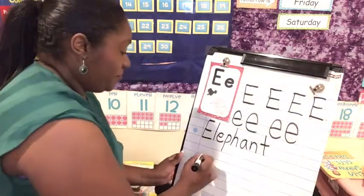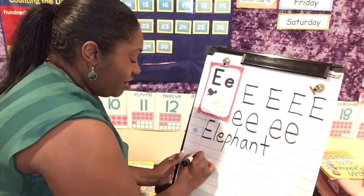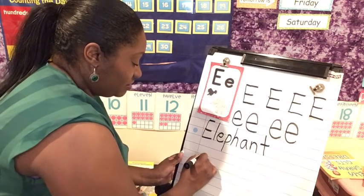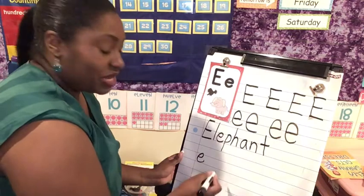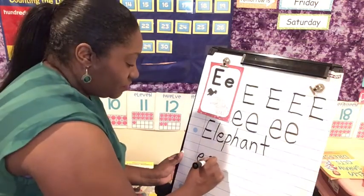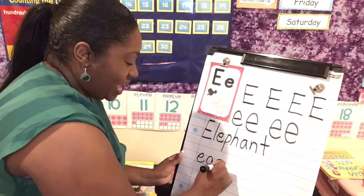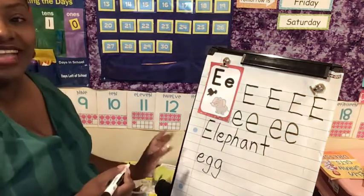What's another word that we learned? Oh yeah, they are so yummy to eat. Lowercase e, g, and g. That spells egg.